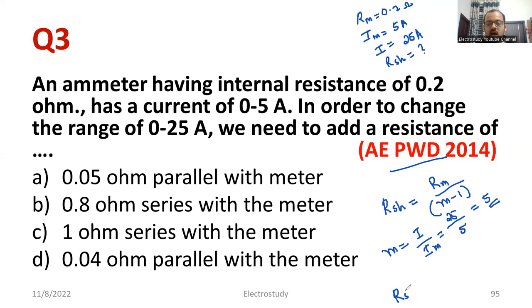Therefore, you can compute RSH. RSH is equal to RM. RM is how much? 0.2, right? 0.2 divided by M is nothing but 5, 5 minus 1. So 0.2 by how much? 0.2 divided by 4. What is the answer 0.2 by 4? 0.2 by 4 is nothing but 0.05.